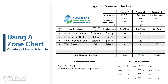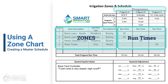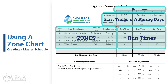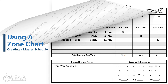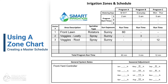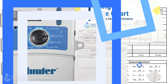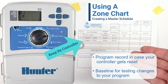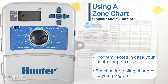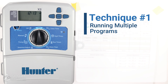Using the zone chart from smartirrigation.com, we easily organized the details and watering schedule of each irrigation zone and planned it across three programs for each controller according to the start times and watering days needed. The result is a master schedule for each controller. Once your zone charts are complete, keep them by each controller as a record so you don't need to remember the details and have a baseline to compare against when making modifications to your program.